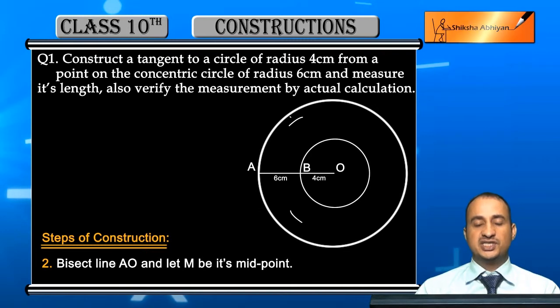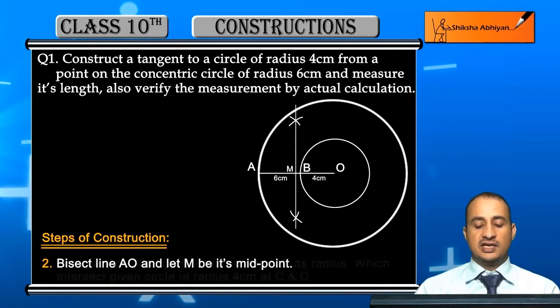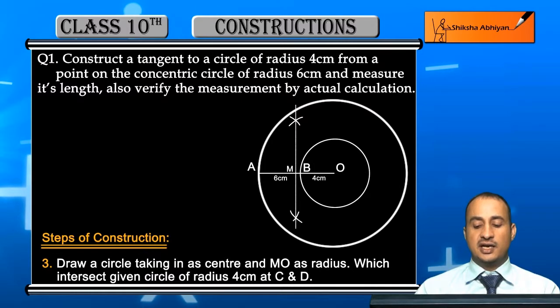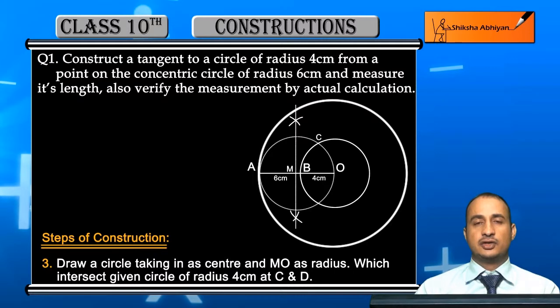Let M be its midpoint. Now student, draw a circle taking M as center and MO as radius. MO ko radius leke M ko center leke ek circle draw ki jaye jo intersect given circle of radius 4 cm.